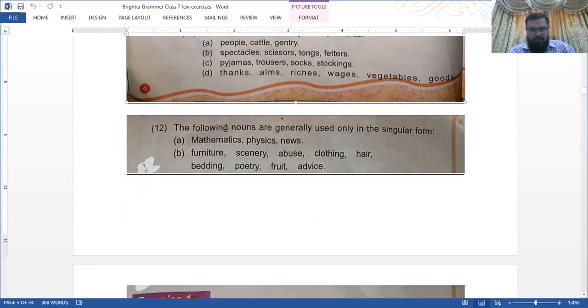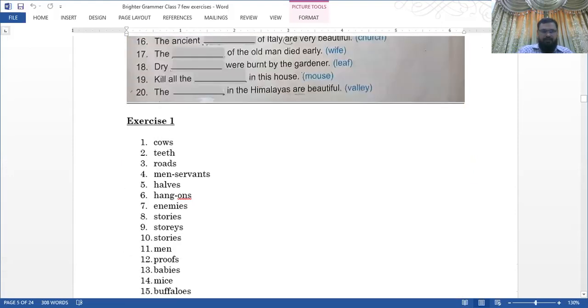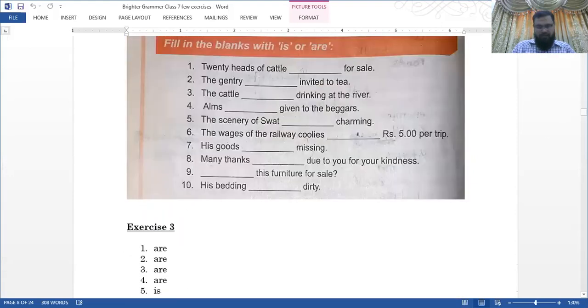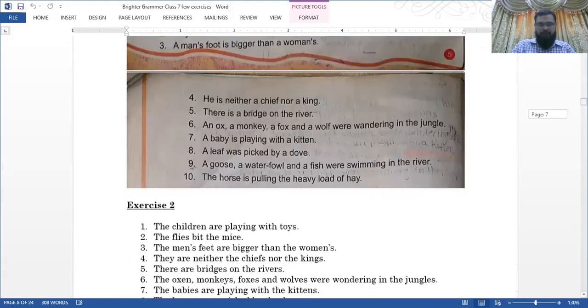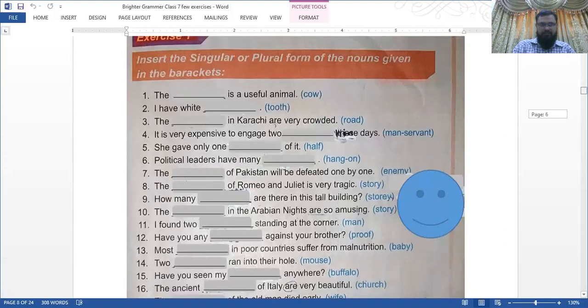Now, Exercise One: Insert the singular or plural form of the noun given in the brackets. This is the same - blanks that were done, but I have had to do some artwork on it because the books are used. Number one: The dash is a beautiful animal (cow). You should know what is the plural, what is the singular. Cow is itself a singular.